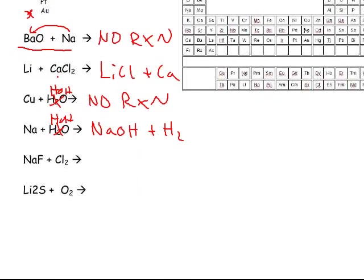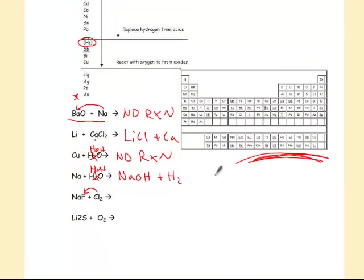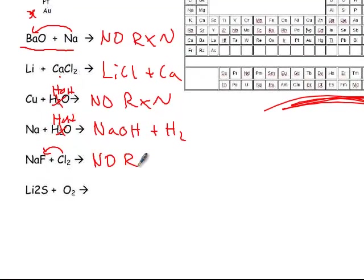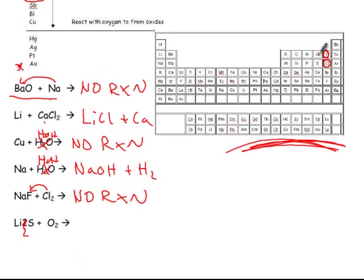A trickier case: chlorine trying to replace fluorine. You won't find chlorine and fluorine in an activity series of metals because they're nonmetals. For nonmetals, we use the periodic table as an activity series, and I'll only ask from the same column. Fluorine is higher on the periodic table than chlorine, so fluorine is more reactive, and chlorine cannot knock fluorine out. But oxygen trying to replace sulfur — oxygen is higher on the list, so that replacement does occur.